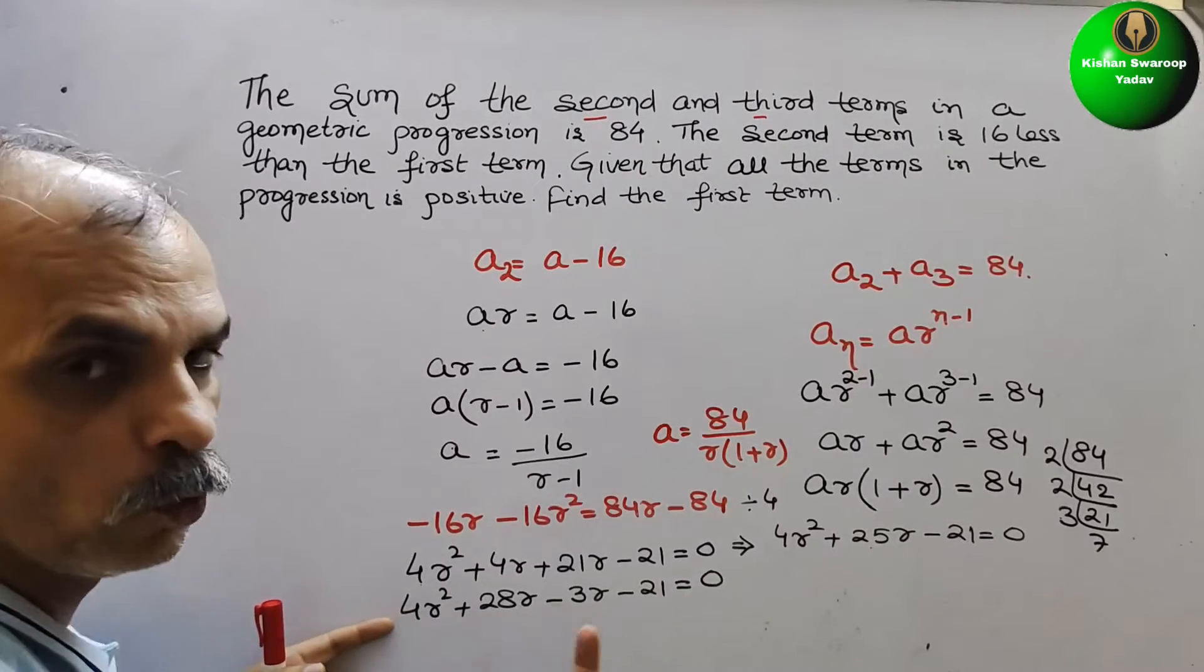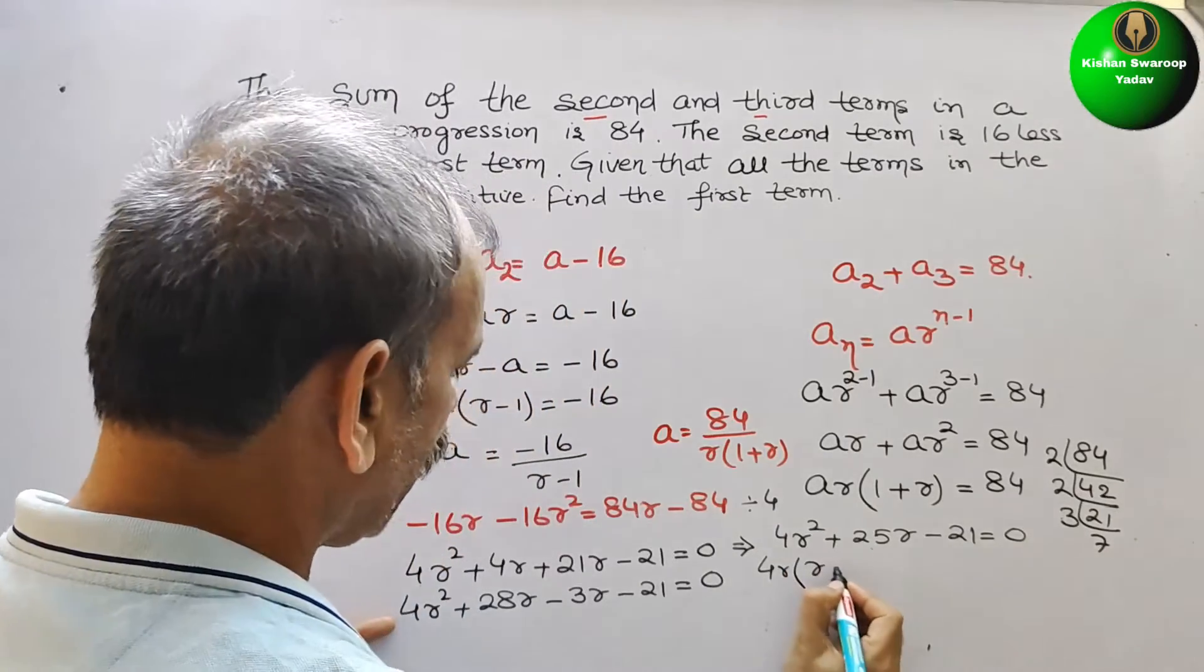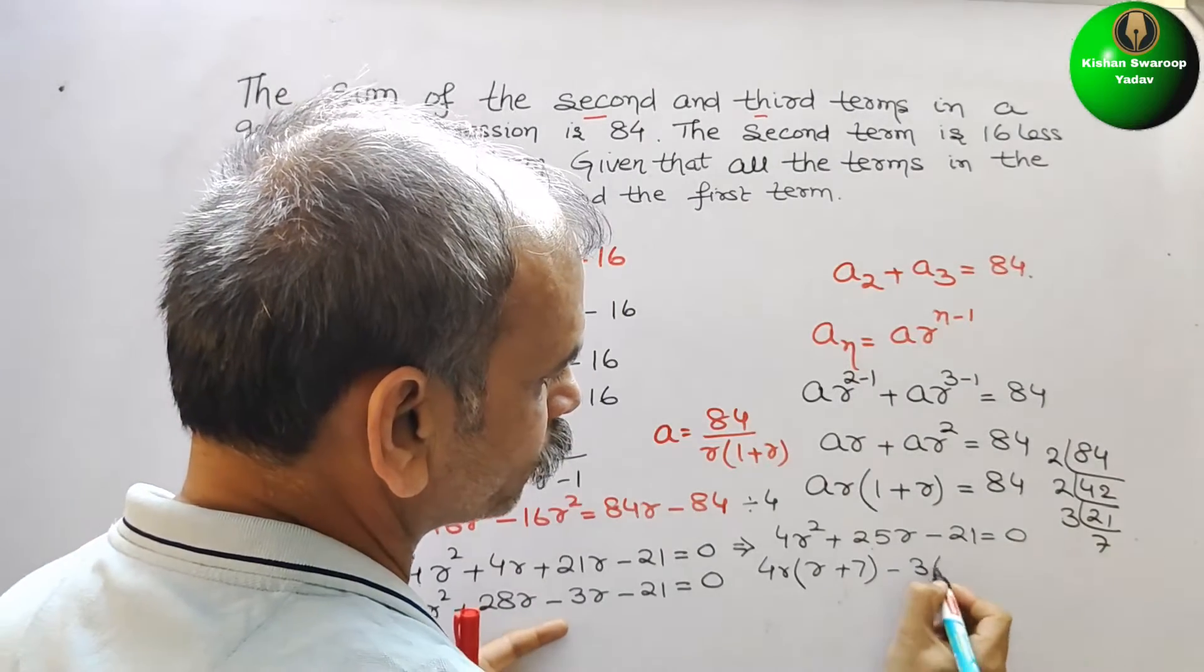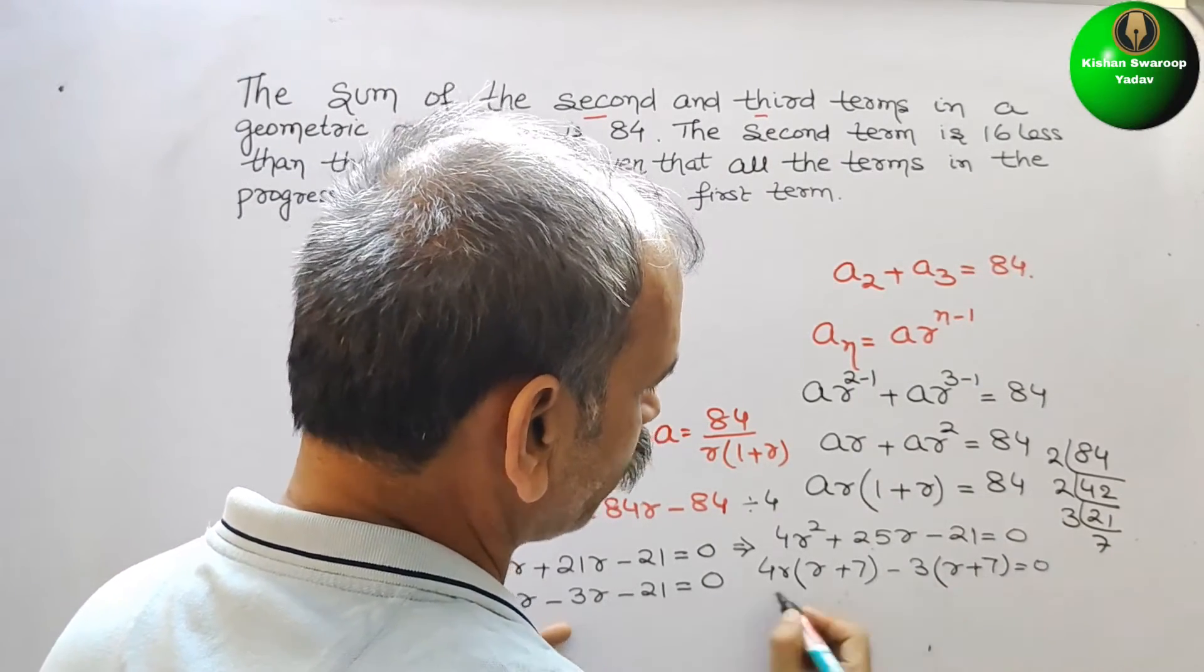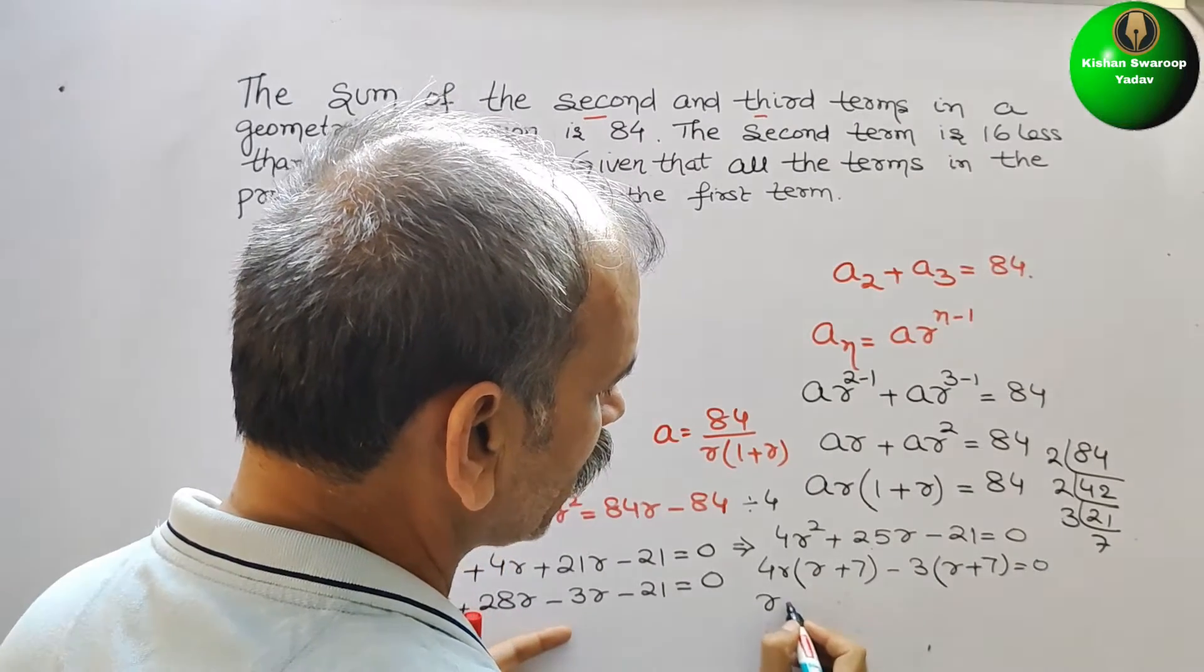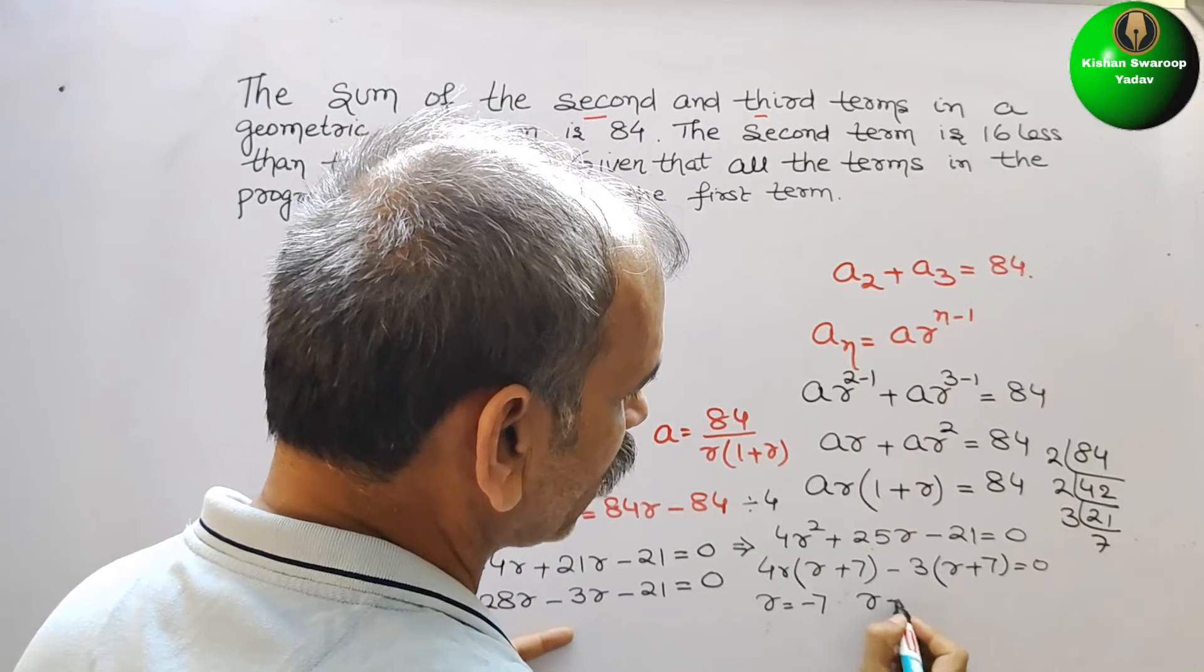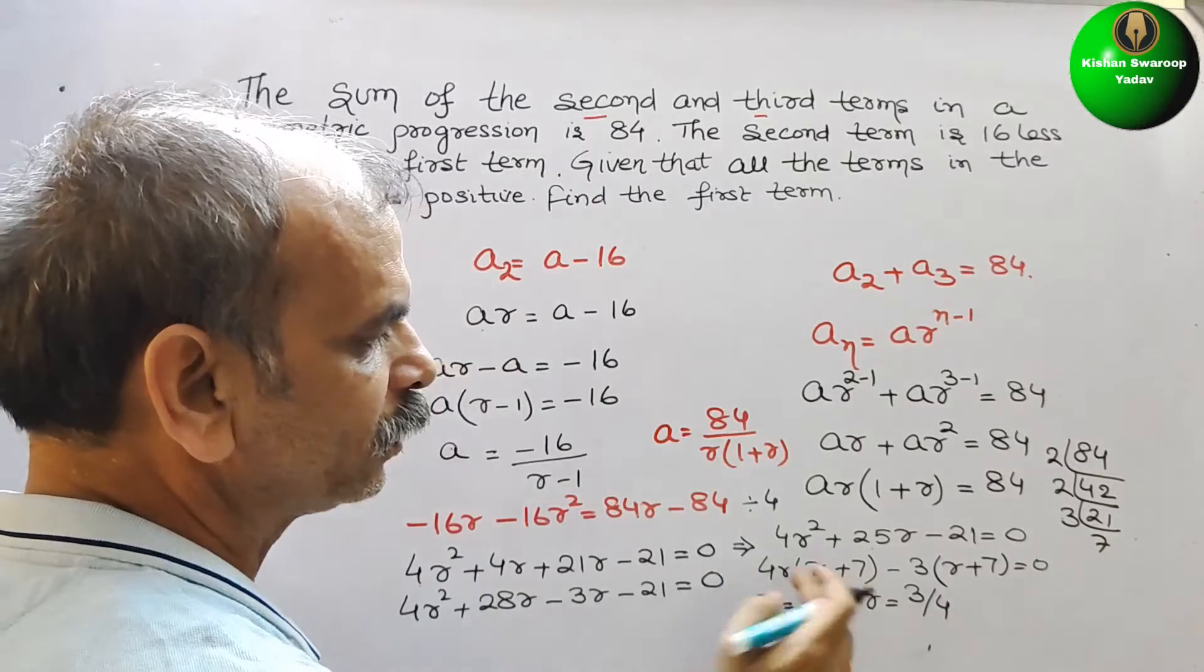So in this two, 4r is common. So we will get r plus 7. In this, minus 3 is common. We get r plus 7. So therefore, we will get r is equal to minus 7 and r is equal to 3 by 4. We got these 2 values from here.